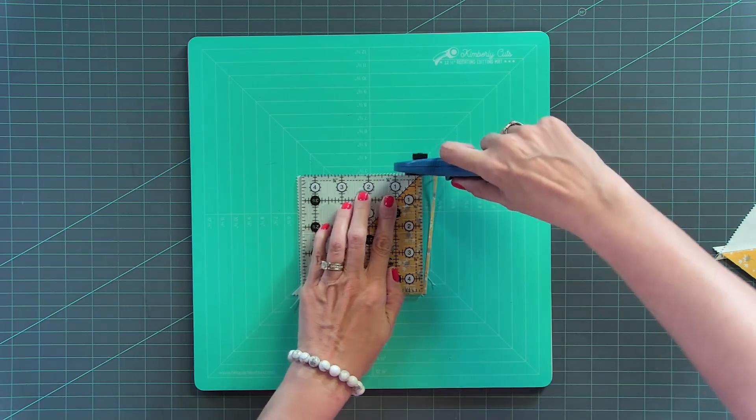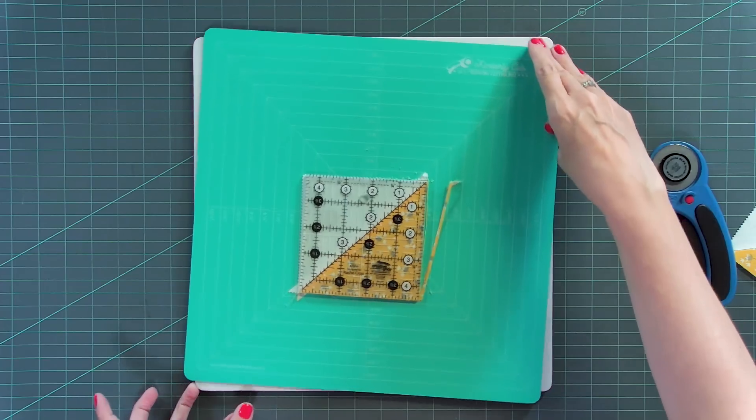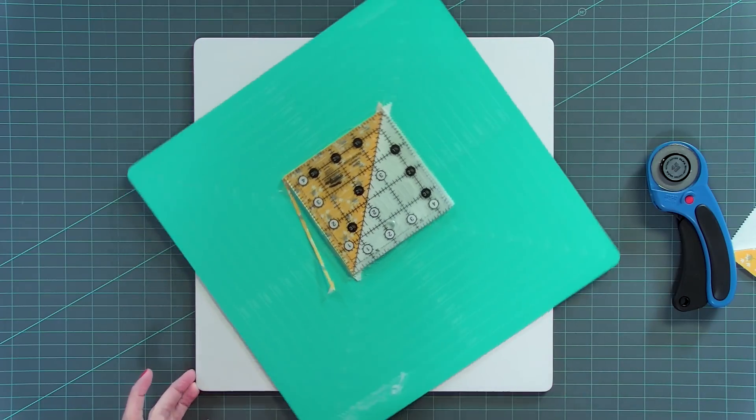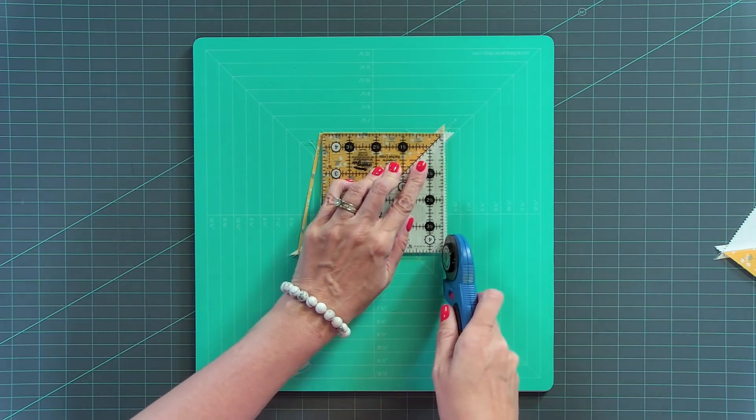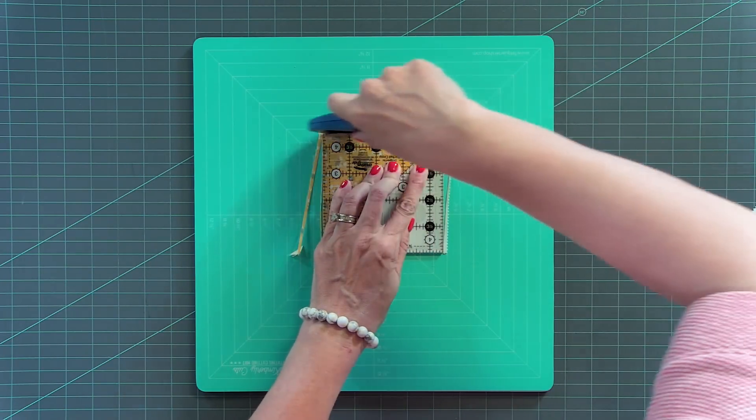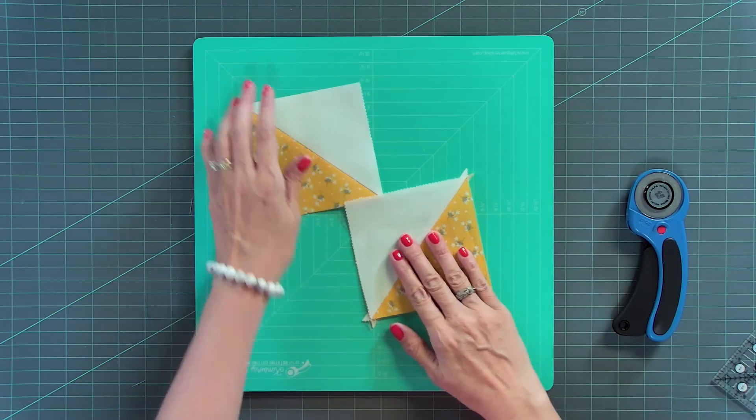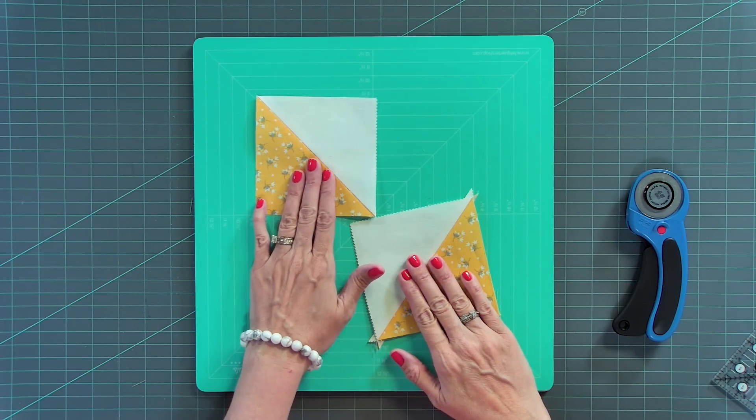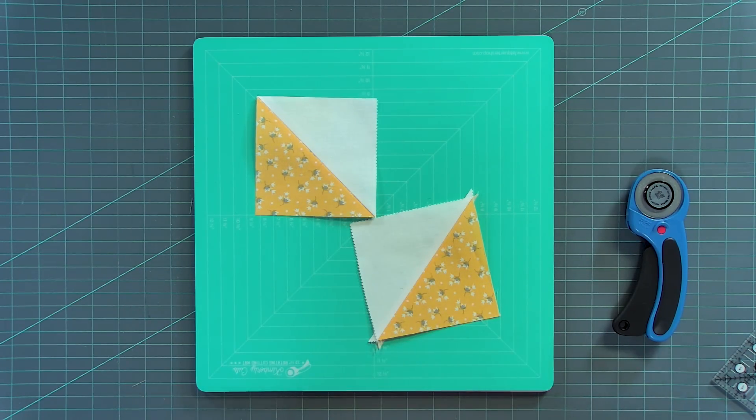And this is why you can't starch because you wouldn't have enough excess fabric to trim down. And so just repeat that step on all of your half square triangles and we'll move to making the block.